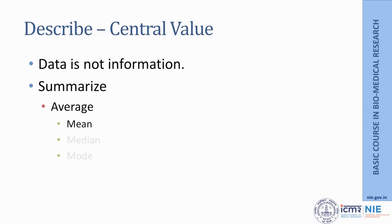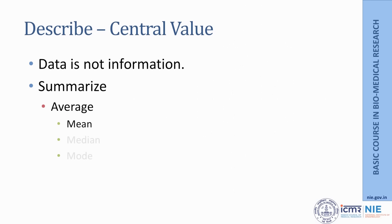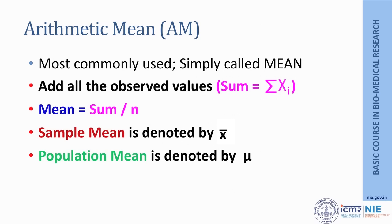Our aim is to get some information out of a large set of data. Looking at raw data alone, you cannot get any information, so we need to summarize it. One way of summarizing data is to get an average value. The first average that comes to mind is the mean — also called the arithmetic mean. It is simply the sum of all observed values (sigma xi) divided by the number of observations (n). The sample mean is denoted by x-bar and the population mean by mu.